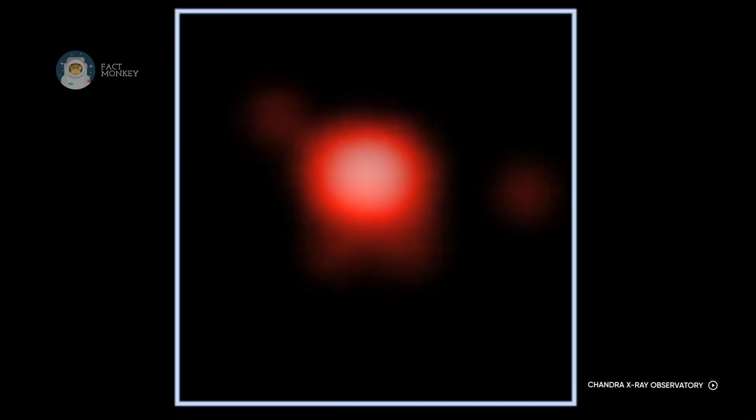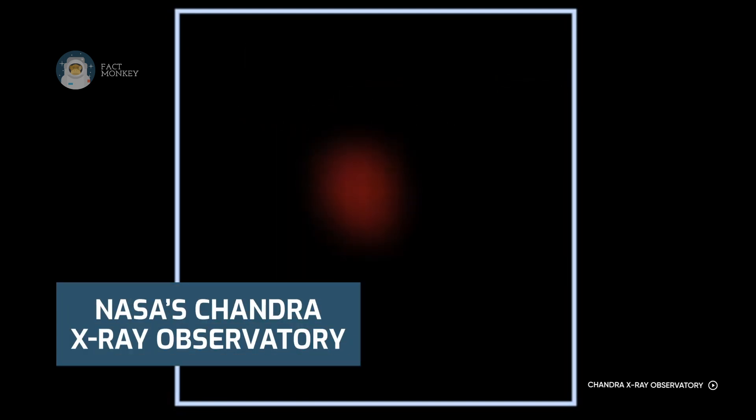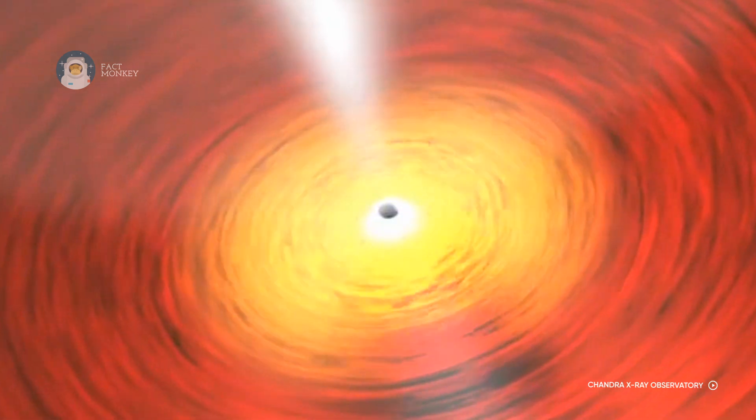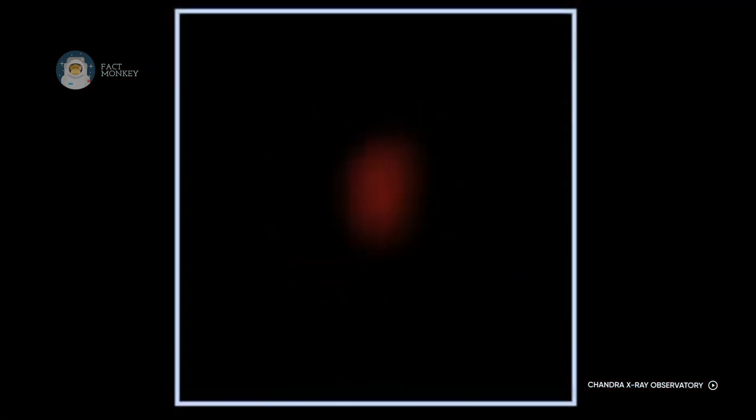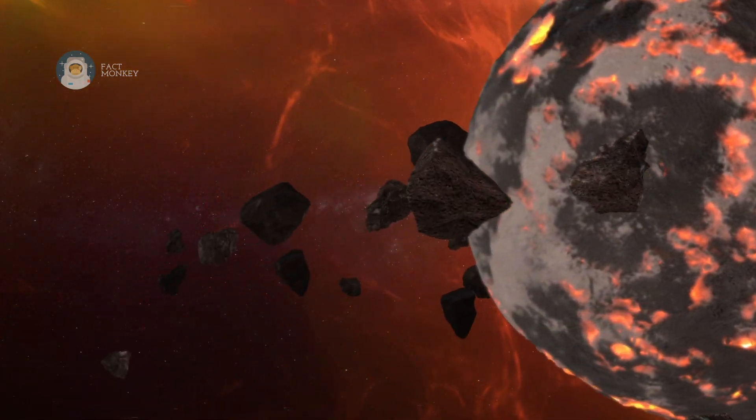The galaxy GSN069 is home to a black hole that's reportedly 400,000 times the size of the Sun. Thanks to NASA's Chandra X-ray Observatory, they discovered that a red giant star approached and swept past the black hole, but it didn't come off unscathed. Its outer layers that contain hydrogen were stripped off the red giant, and only the core was left to become a dwarf planet.